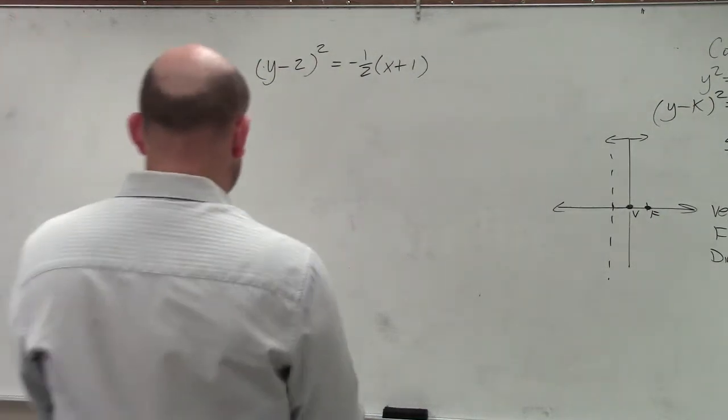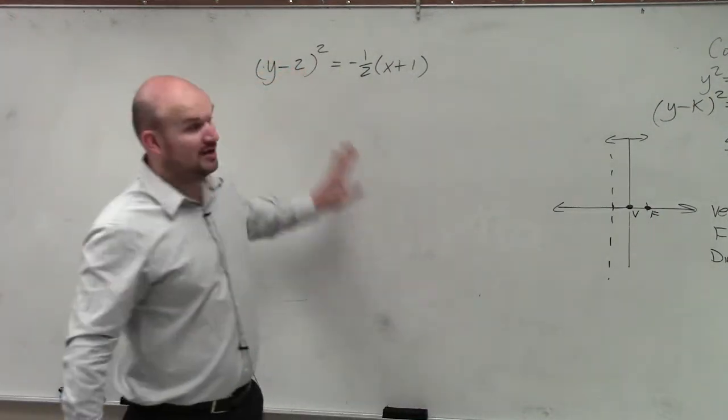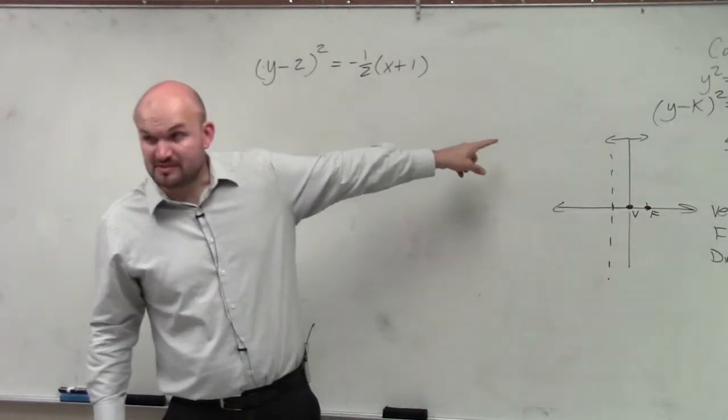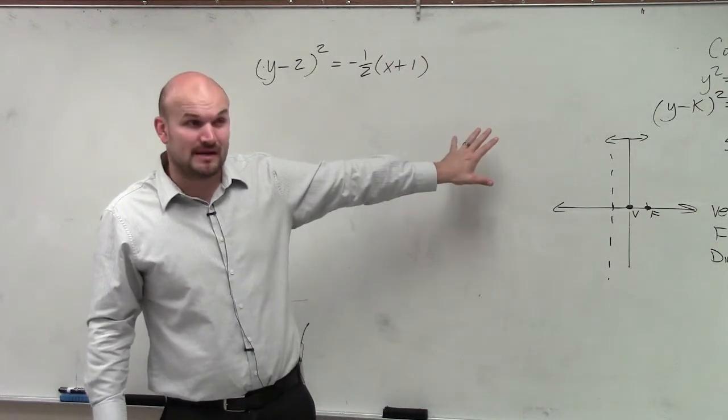We see there's a fraction. We know we don't like fractions. But we also see there's a y squared. And I recognize from y squared from the previous problem, I know that's a horizontal parabola, right?